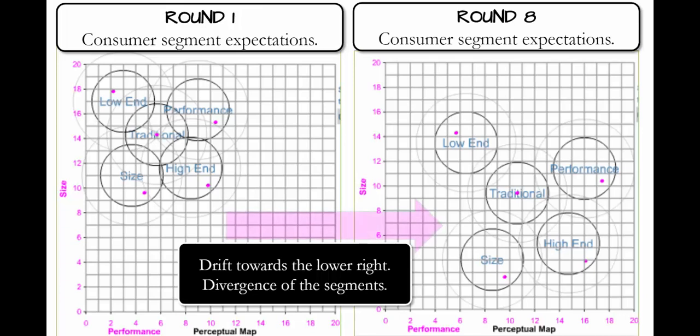Each year consumers will expect faster — meaning higher performing — and smaller sensors. So what happens over time in the simulation is that the segment circles will drift to the lower right. By the end of round eight, all market segments expect faster and smaller sensors compared to year one. Please also note how the market segments continue to diverge over time.